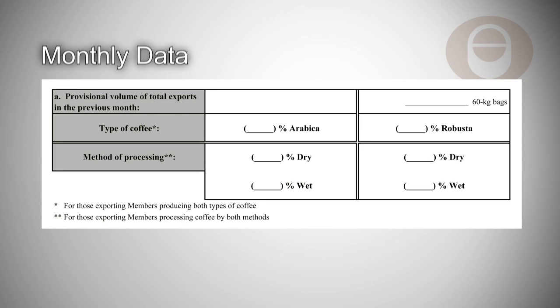We're now going to cover the information that needs to be sent on a monthly, quarterly, and annual basis. Starting with the monthly information, this needs to be sent within 30 days of the close of the month.